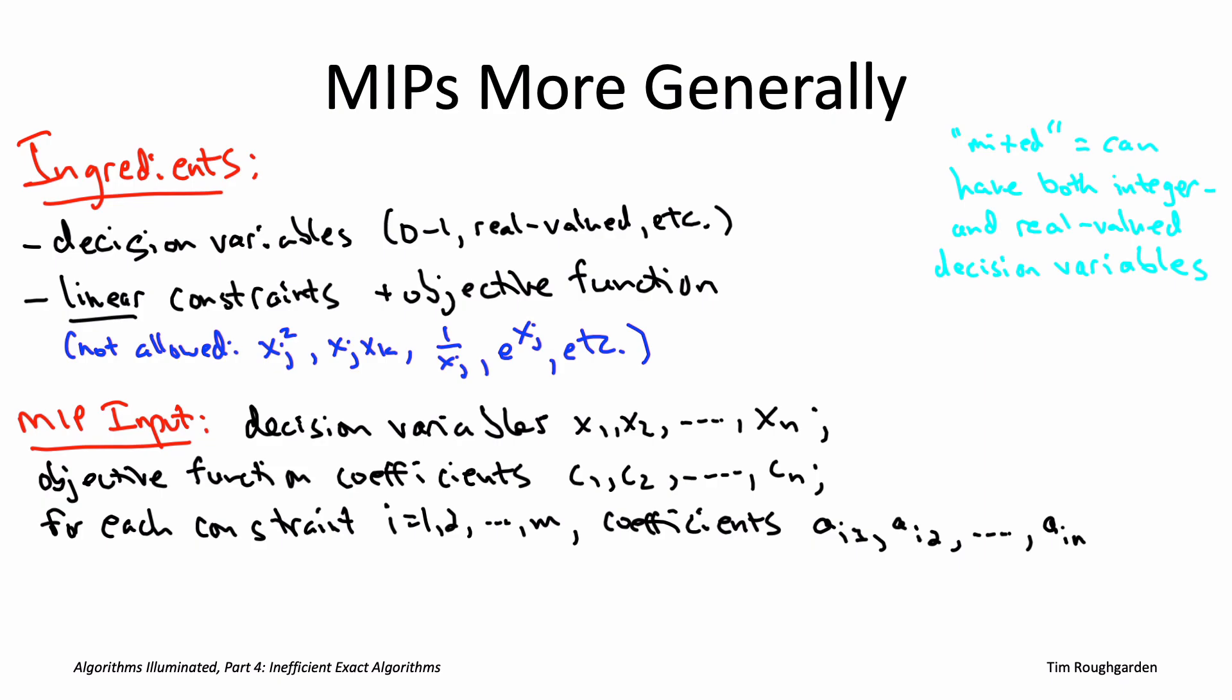Similarly, for each constraint, and unlike the knapsack problem, you're perfectly welcome to have more than one constraint in a mixed integer program. So for each of the M constraints, again, it needs to be linear. So you need to specify the coefficients. You also need to specify a right-hand side for the constraint. For example, in the knapsack problem,